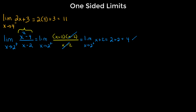Suppose we have the limit as x approaches 1 from the left of |x - 1| / (x - 1). You might think we can just cancel these out, but that is not what we can do. At x = 1, we would not have continuity because the denominator would be 0.